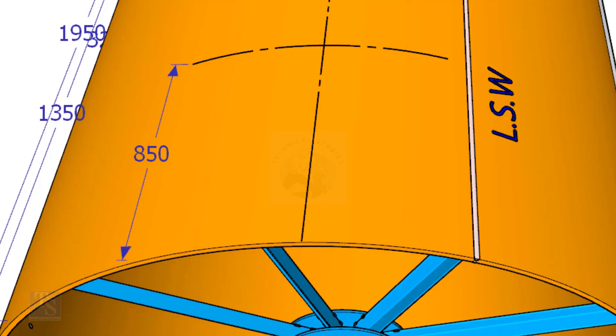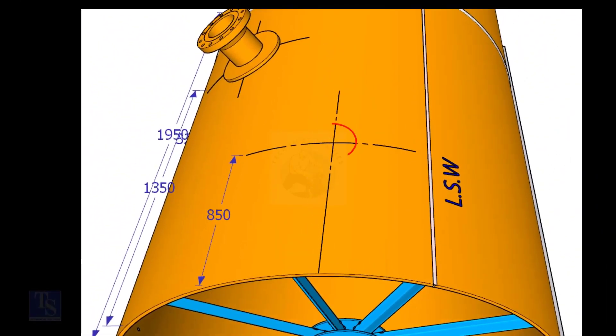Mark the same distance roughly 850 millimeters away from the end of the shell and draw a line. Now mark 850 millimeters exactly on this line from the end of the shell as shown. This is the center of the nozzle N1.